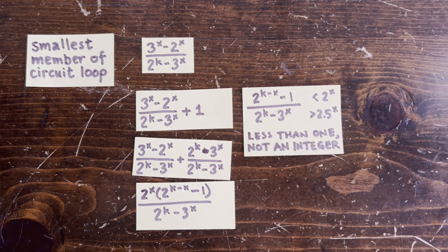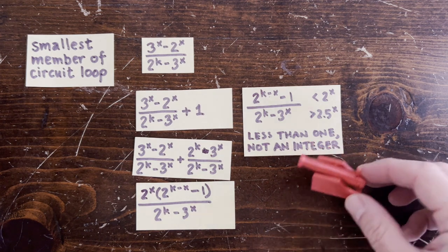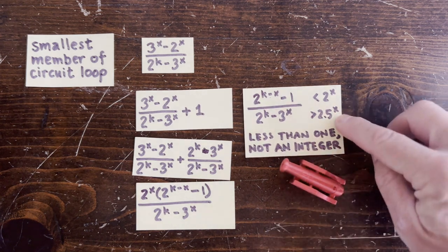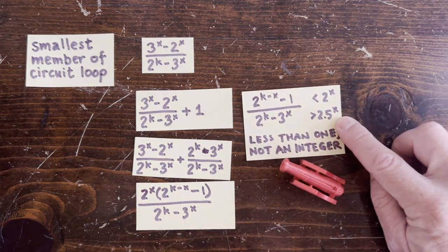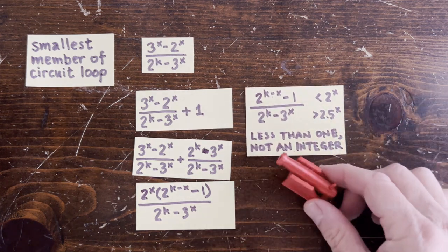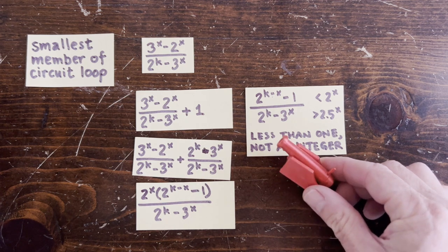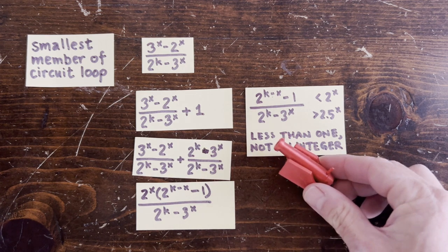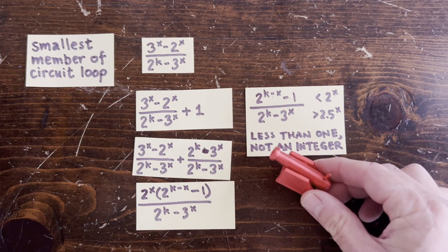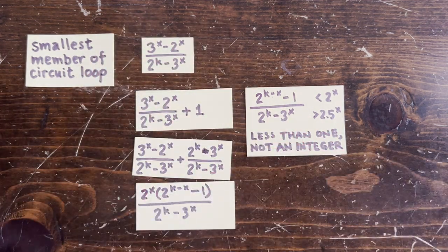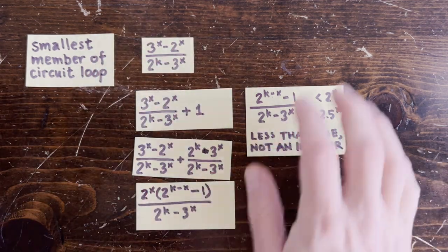The last fact came from some monstrously complicated transcendental number theory developed by Alan Baker in the 1960s. It's kind of sad that we need such heavy artillery to prove that this simple expression can never be an integer for any k or x.